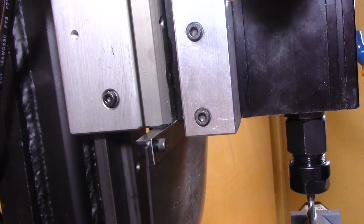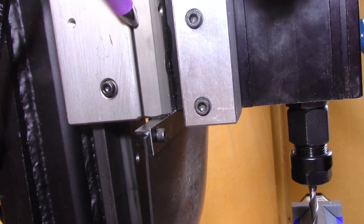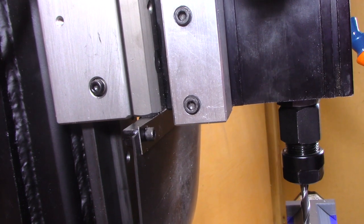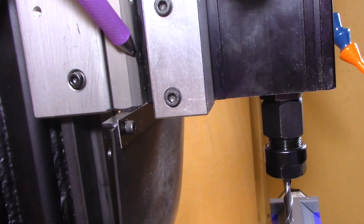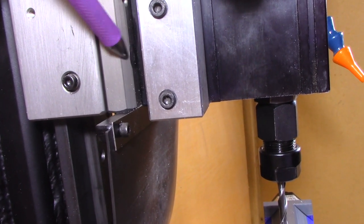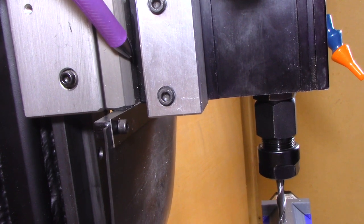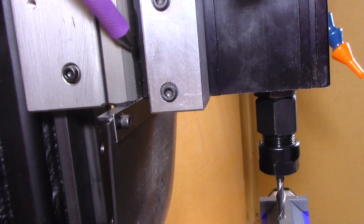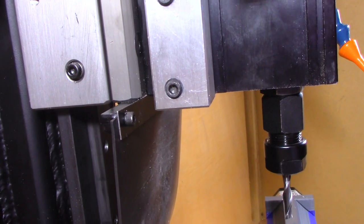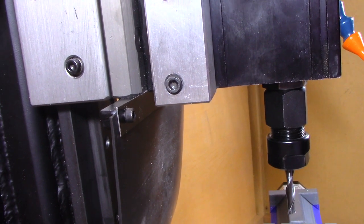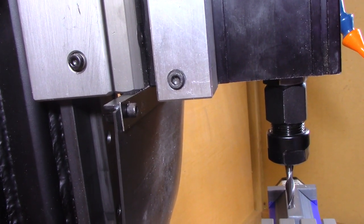Once I had the column vertical, then it was time to tram the head, and I needed to tram the head in both the X and Y directions. For the Y direction, I have a little piece of shim—again, this is some of the feeler gauge stock back here—and this is sticking out so that I can easily change it. I changed it a few times until I got it just right.